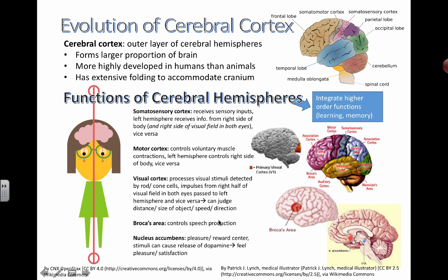Finally, the nucleus accumbens is the pleasure reward center. Different types of stimuli can cause the release of dopamine, which is a hormone that brings feelings of pleasure and satisfaction. So if you're talking about something very pleasurable while punching someone in the face, those are the areas that are going to be lit up.